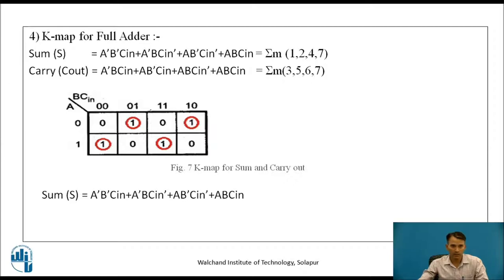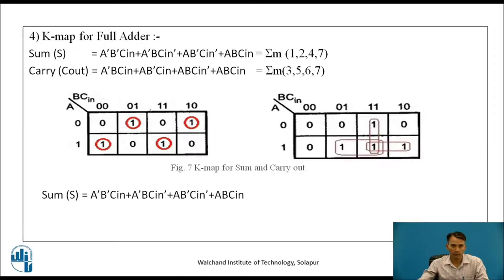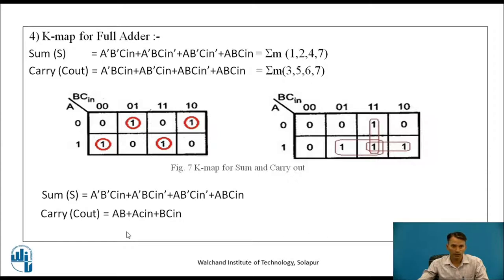Now let us write the K-map for carry-out. By putting 1s into cells 3, 5, 6, and 7, we get 3 pairs. These 3 pairs reduce the carry-out equation to: C-out = AB + AC-in + BC-in.